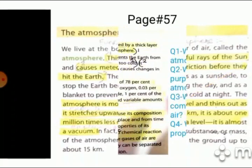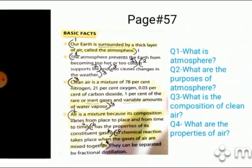Now come to the basic facts on page 57 and hold your pencils in your hand to write down the question. Question number 1 is what is atmosphere? And the answer is the first basic fact. Question number 2 is what are the purposes or functions of atmosphere? And the answer is the 2nd basic fact. Question number 3 what is the composition of clean air? And the answer is the 3rd basic fact. Question number 4 what are the properties of air? And the answer is in the 4th basic fact.